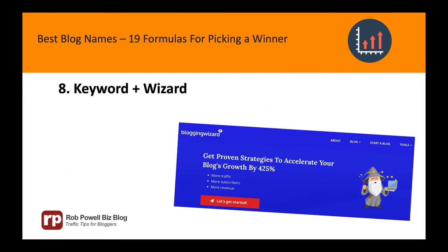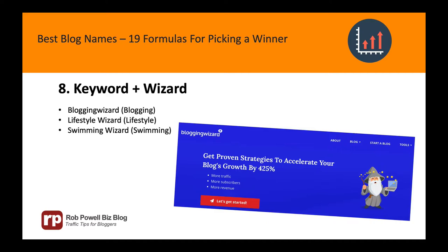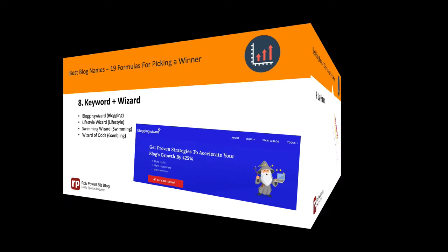Formula 8: Your keyword plus the word 'wizard.' If your blog is about helping people to do something, 'wizard' is a good word to have in your blog name. For example: Blogging Wizard, Lifestyle Wizard, Swimming Wizard, and Wizard of Odds.